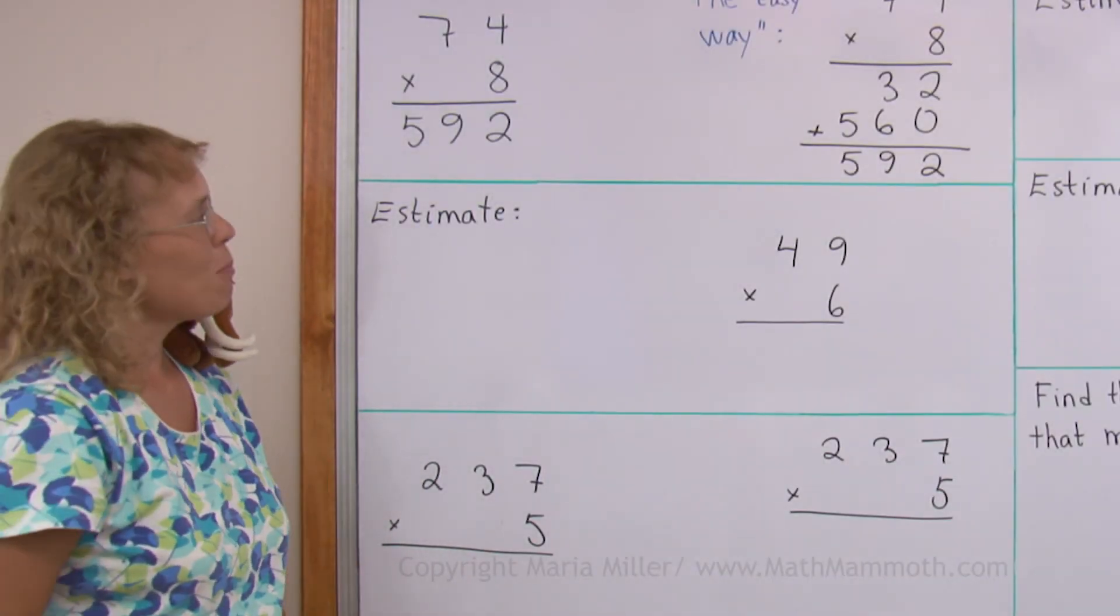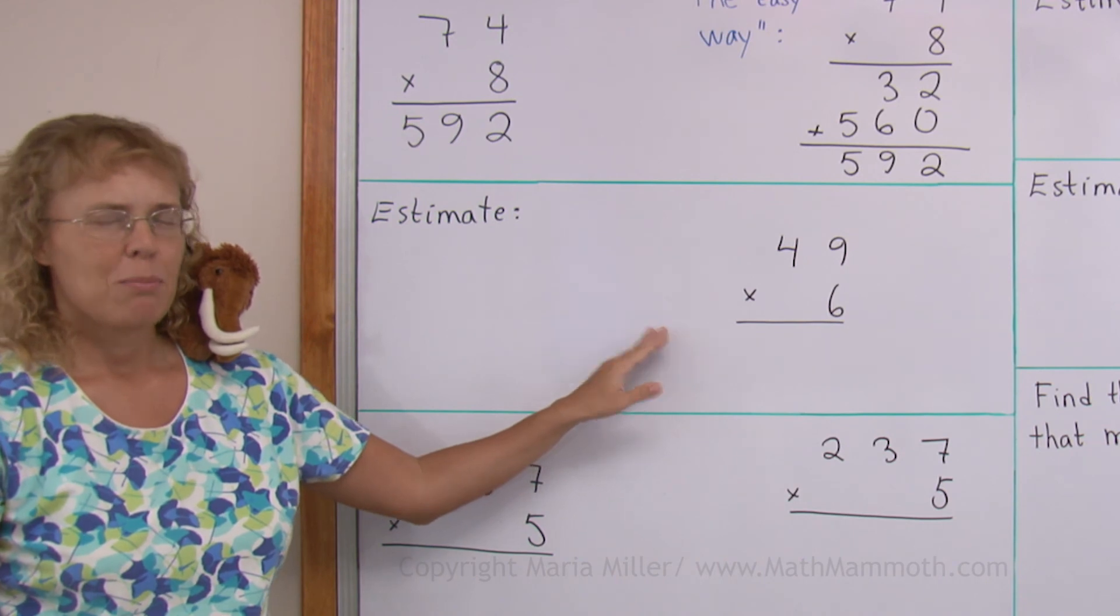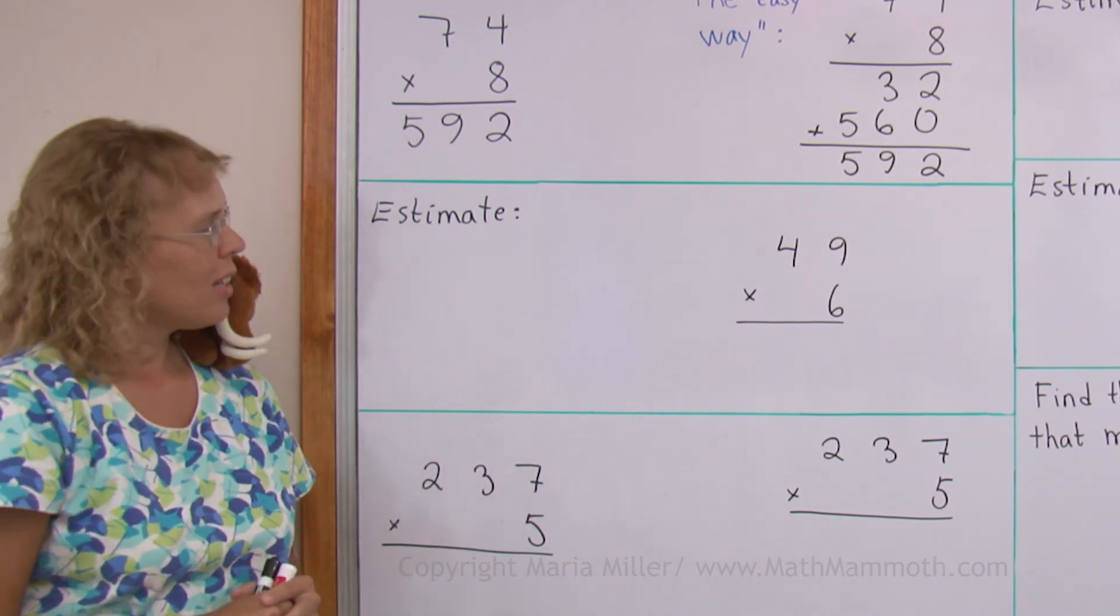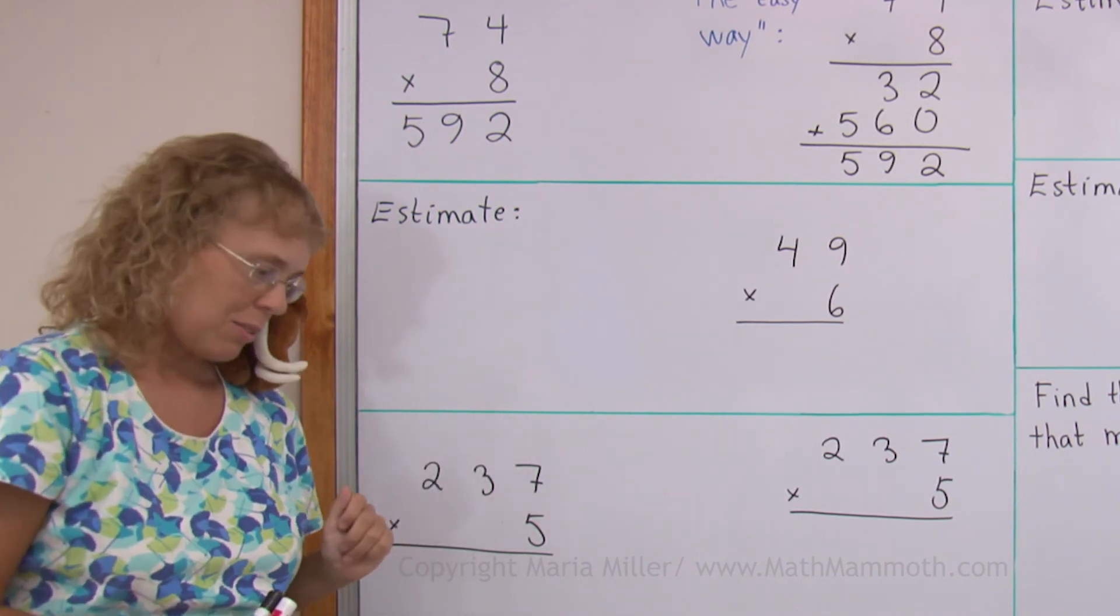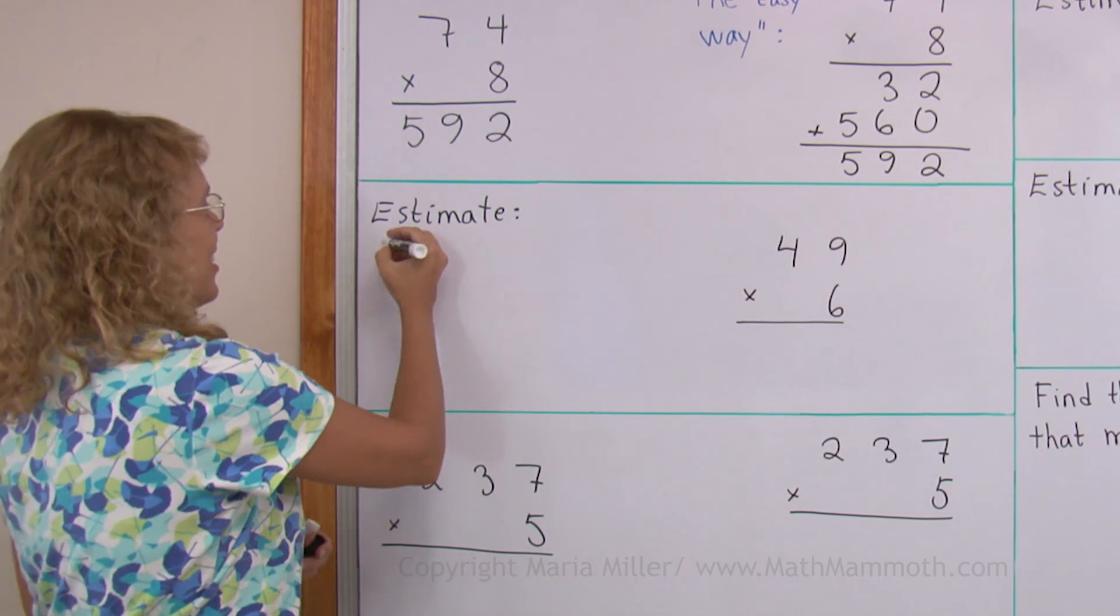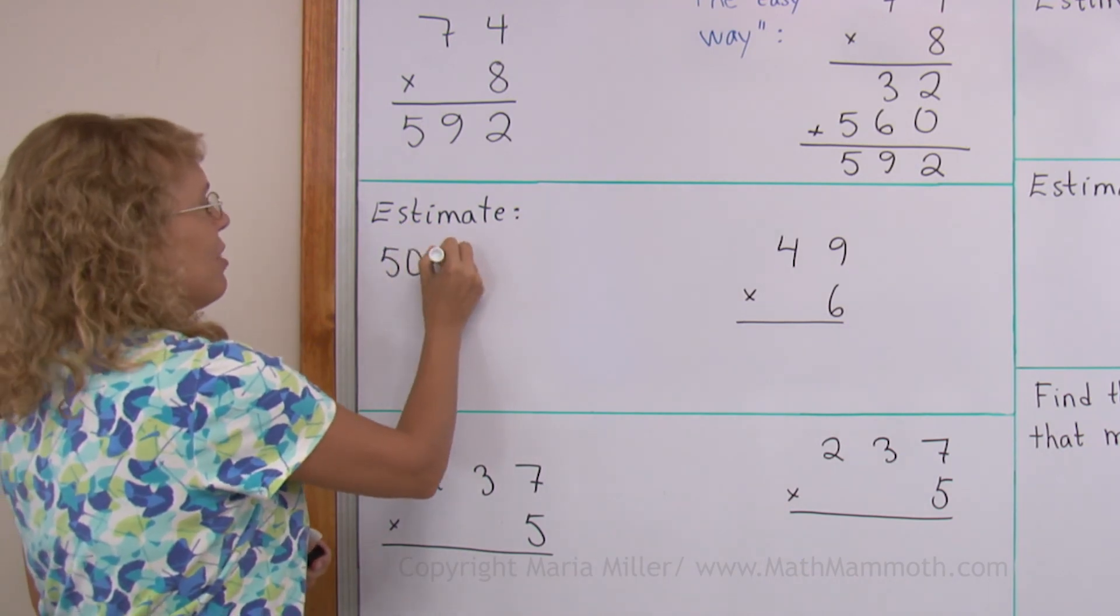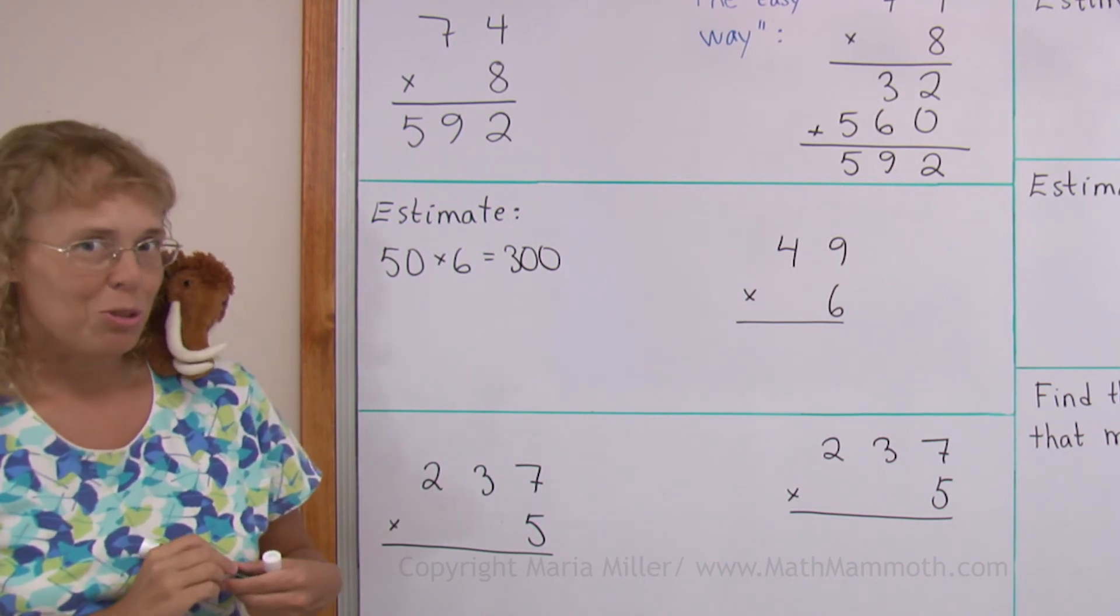Okay, let's go on. Practice some more. 49 times 6. But first, we are going to estimate. How would you estimate 49 times 6? Of course, you round this to 50. 50 times 6. So our answer should be close to 300.